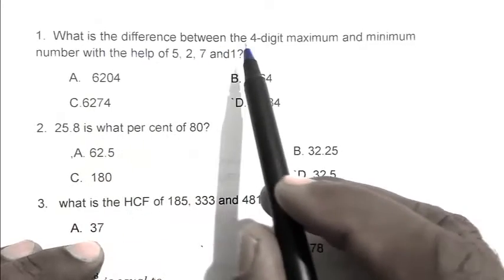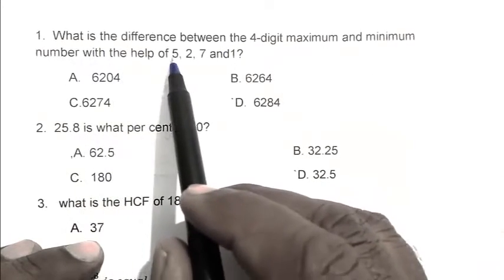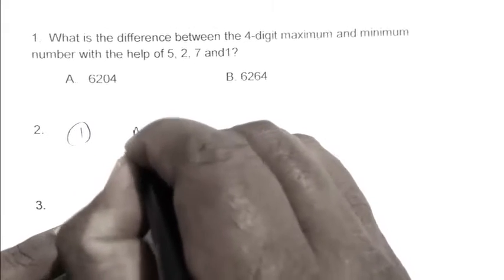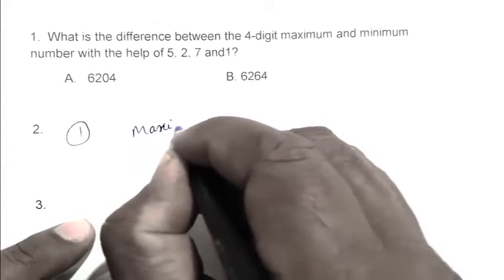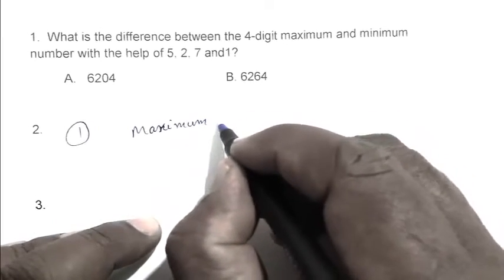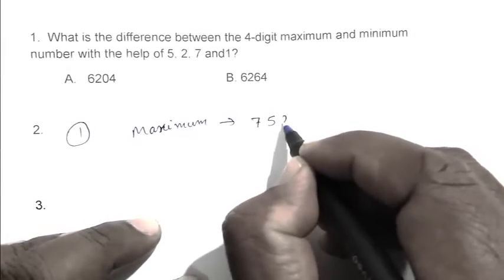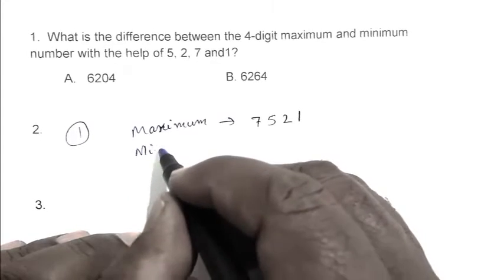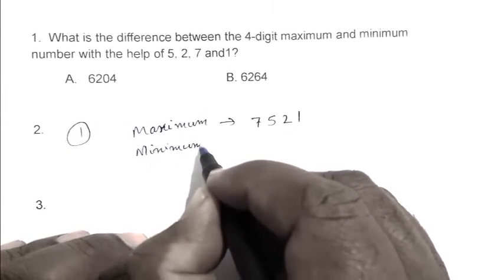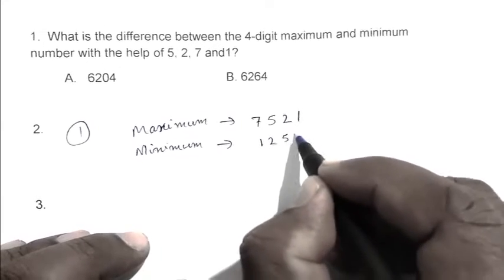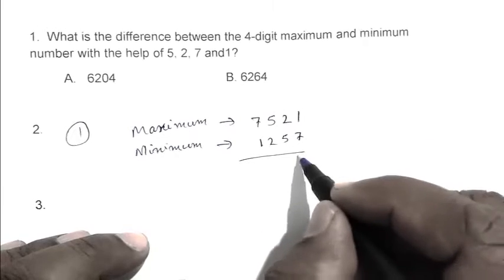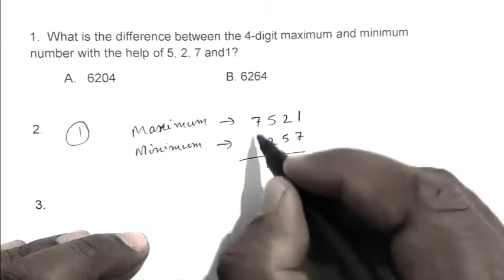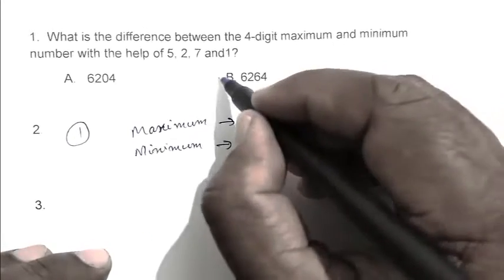Question number 1: What is the difference between the 4-digit maximum and minimum number with the help of 5, 2, 7 and 1? The maximum number is 7521, and the minimum is 1257. Getting the difference we get 6264. So B is the right answer.